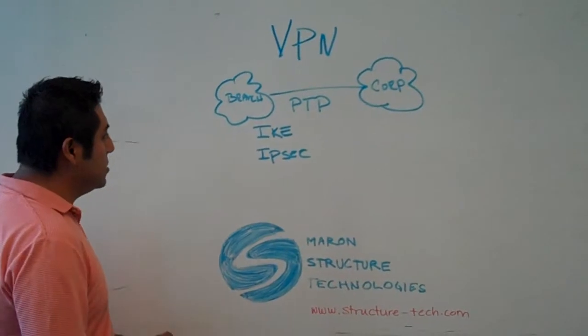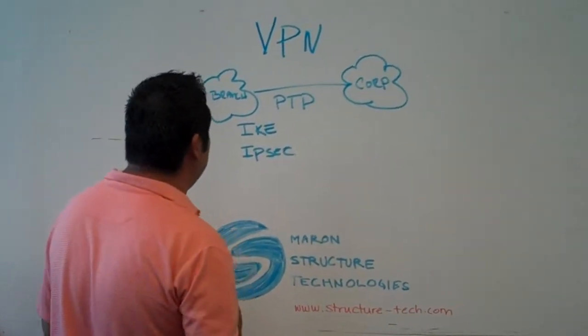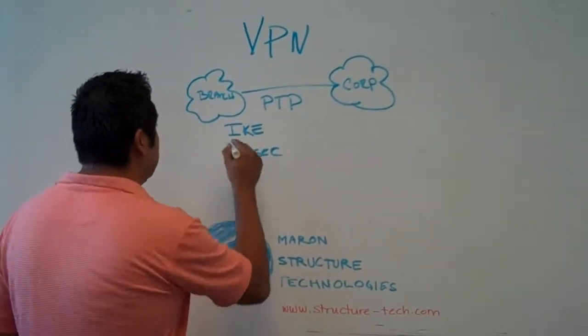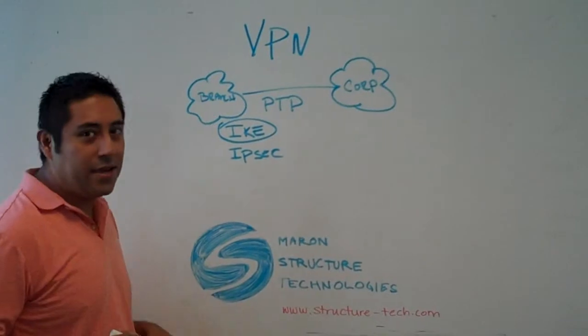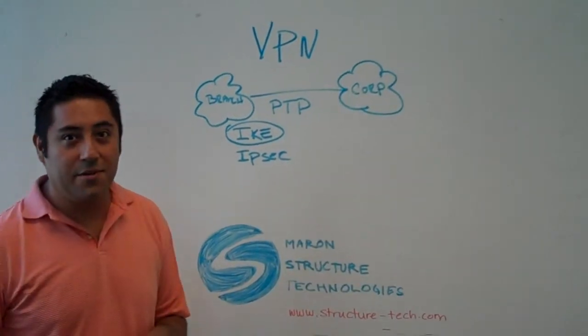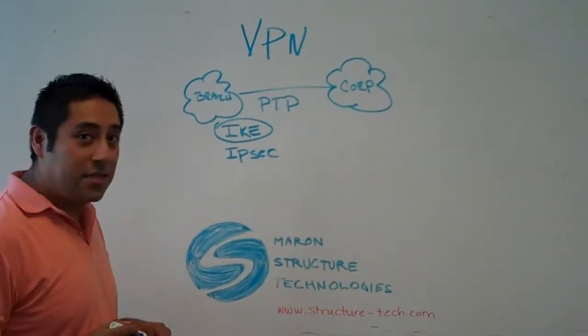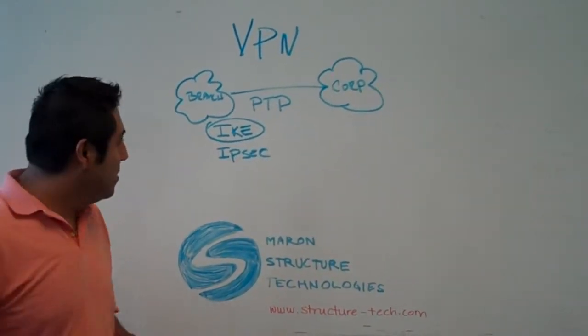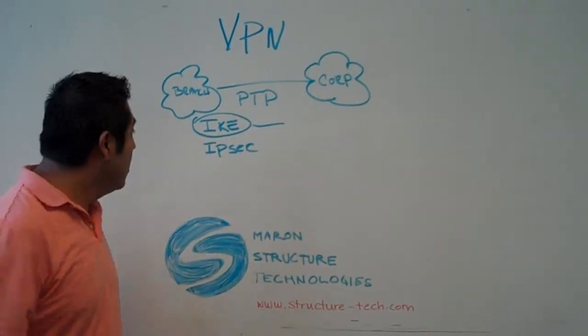A couple things that you need to consider when deploying point-to-point VPNs. First is when you set up your IKE. No, that's not your neighbor's kid. IKE is basically your key, or your pre-shared key and authentication mechanism.